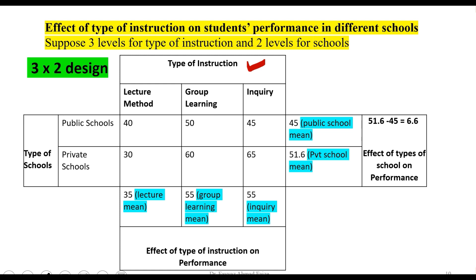For the main effect due to type of instruction — our second factor — the mean for lecture is 35, the mean for group learning is 55, and the mean for inquiry is also 55. Because these values are different, there is a main effect due to type of instruction.